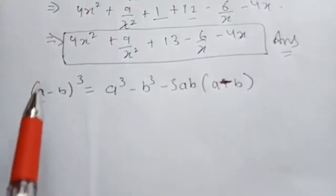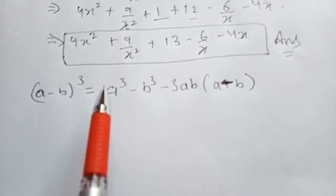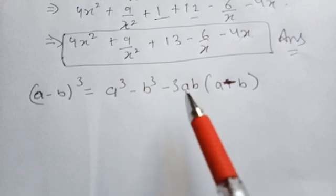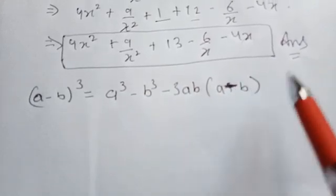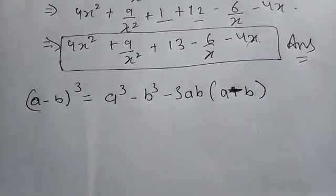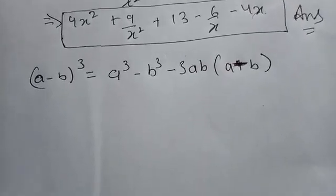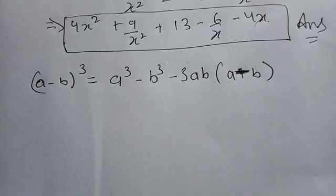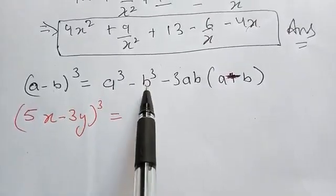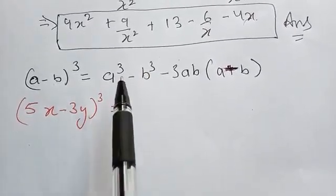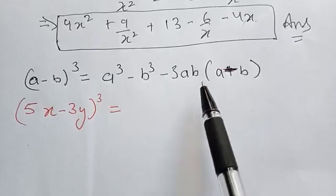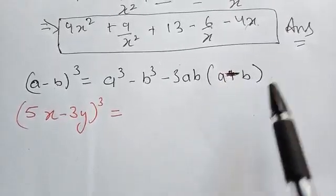Another formula in your book is (a − b)³. The expanded form is a³ − b³ − 3ab(a − b). Note that this sign here is minus. Now we'll look at a question from the exercise related to this formula. The question is given in product form and I need to change it to expanded form, using (a − b)³ = a³ − b³ − 3ab(a − b).